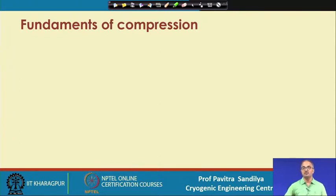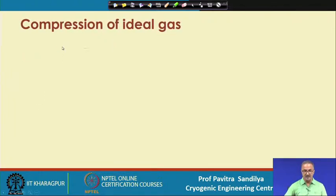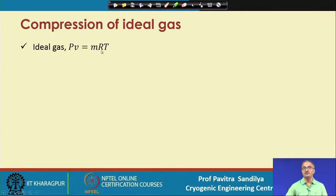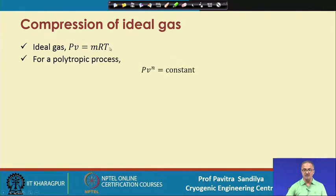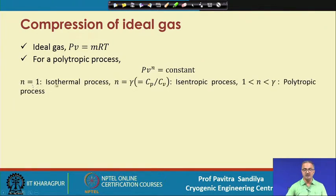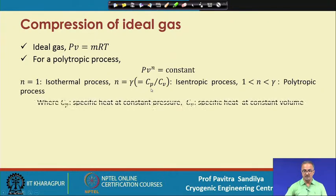Now let us go to some fundamentals of compression. For an ideal gas, PV = mRT, where m is the mass and R is the gas constant. If we write it in terms of the number of moles, we use the universal gas constant. For a polytropic process we have PV^n = constant. If n equals 1, that is an isothermal process. For an isentropic process, n equals gamma, which equals Cp/Cv — the ratio of specific heat at constant pressure to specific heat at constant volume.